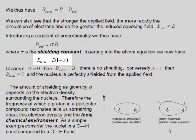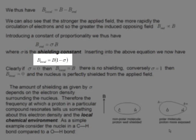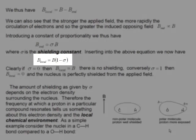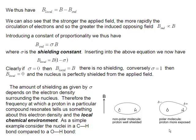We can say that the local field is going to be B times the bracket (1 minus sigma). So if there are no electrons there, then sigma is clearly going to be equal to 0, and then the local field will simply be the applied field.